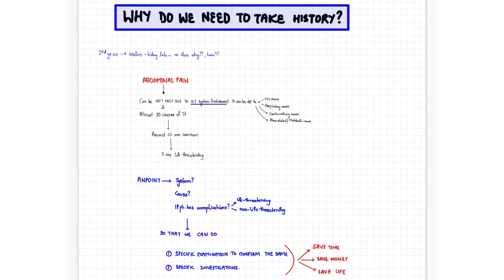With the history, if a patient comes with abdominal pain, we first need to localize which system is being involved. After that we need to know what is the cause of the symptom in that system. And third, we have to know if the patient has any complications related to that cause.